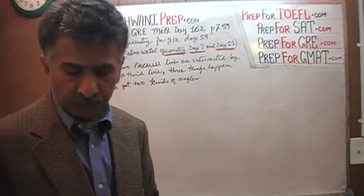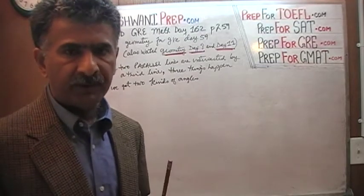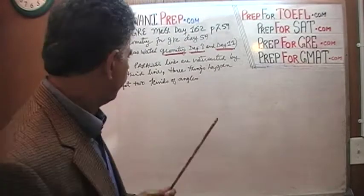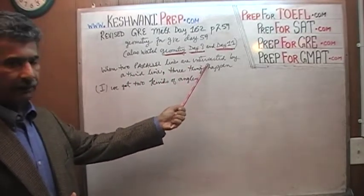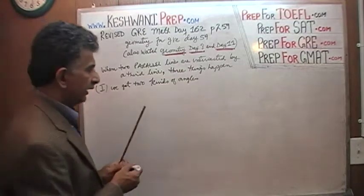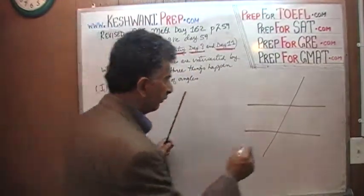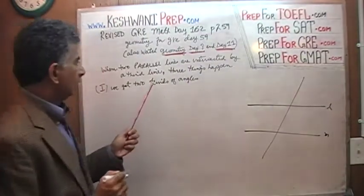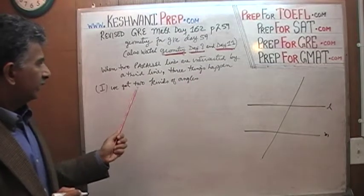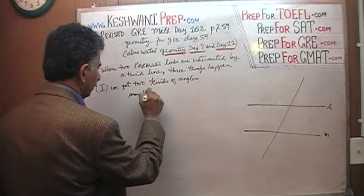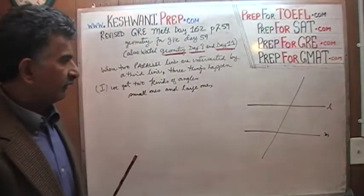The problem given to us here — before I actually solve it, let's talk about parallel lines, the basic things you need to know so that you can solve not only this problem but any problem on the exam dealing with parallel lines. Here is what happens: when two parallel lines are intersected by a third line — intersected means they are cut — three things happen. We get two kinds of angles: small ones and large ones.